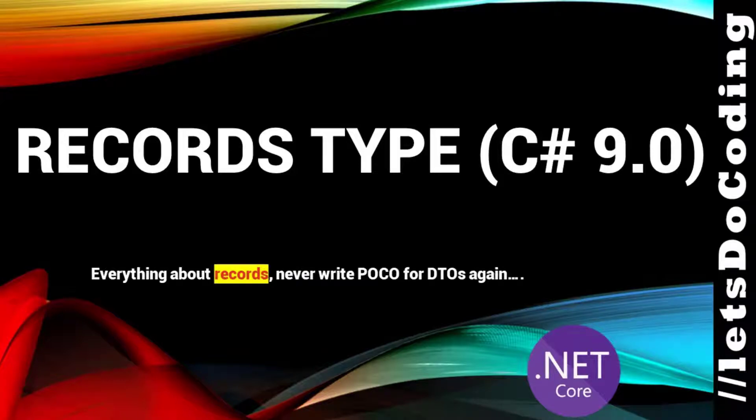Hello everybody and welcome to today's video. Today we are going to talk about a new feature in C# which is going to change the way you transfer objects from one layer to another. Today we are going to talk about records, which is a new type that has been added in C# 9.0, and we start right now.